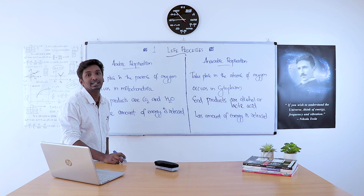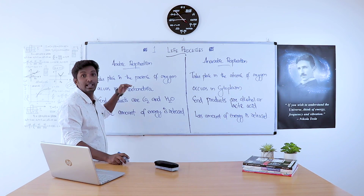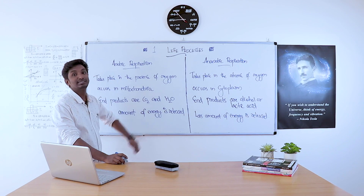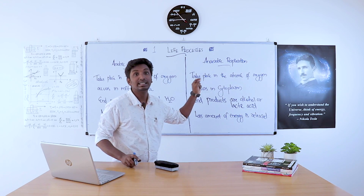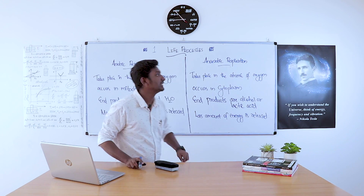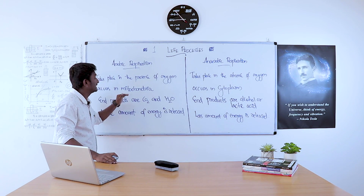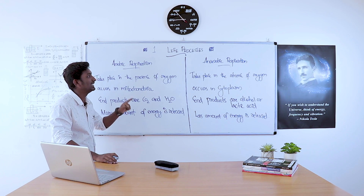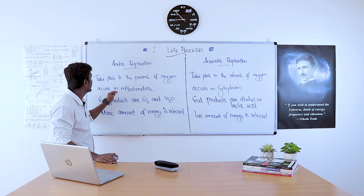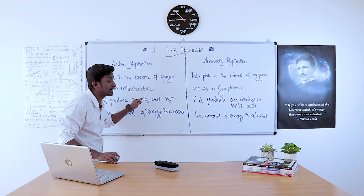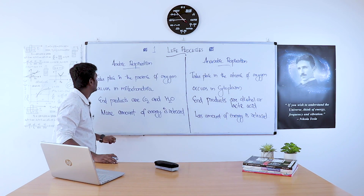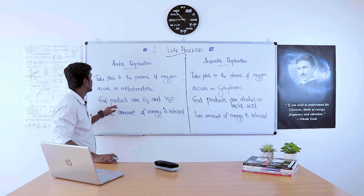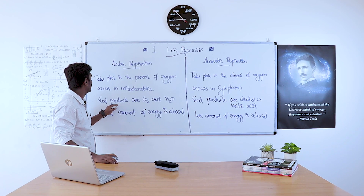What is the difference between aerobic respiration and anaerobic respiration? Aerobic respiration takes place in the presence of oxygen, but anaerobic respiration takes place in the absence of oxygen. Aerobic respiration occurs in the mitochondria, while anaerobic respiration occurs in the cytoplasm.